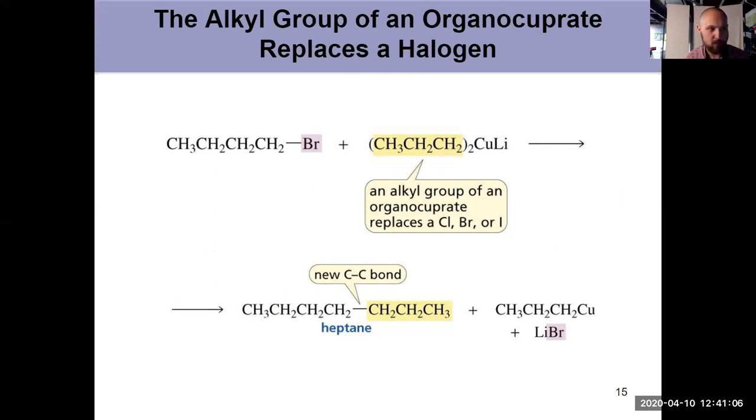This is what a coupling reaction looks like. I take an alkyl halide - you can use alkyl bromides, alkyl chlorides, alkyl iodides, anything except for fluorine. The alkyl halide couples the alkyl group to one of the alkyl groups of the Gilman reagent.